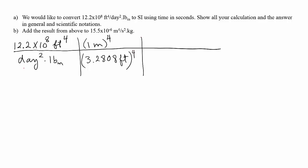Next, I'm gonna convert day. 1 day is equivalent to 24 hours and this is to power 2. Then hour, 1 hour is equivalent to 3600 seconds and these are also to power 2.